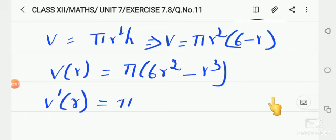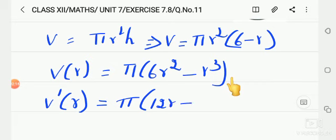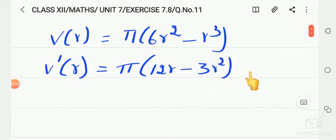Now, let us check. Pi - when we differentiate r square h, we get 2r. Since r is a variable. So, we get 12r minus r cube differentiated gives 3 r square. Now obtain the critical number. We set v dash of r equals 0 and solve.